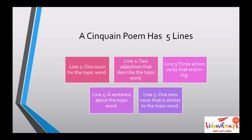So let's get started. A cinquain poem has five lines. Remember, when you start writing a cinquain poem, it must have five lines. Line one: one noun for the topic word — first you have to choose a noun for your topic word. Line two: two adjectives that describe the topic word — here you have to write two adjectives that describe your topic word.